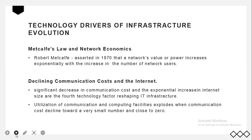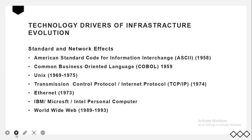The fifth driver is standards and network effects. Without agreements between manufacturers and widespread customer acceptance of technology standards, enterprise infrastructure and internet computing would not be possible. Thanks to technological standards that determine a product's interoperability and a network's capacity to interact, computing is far less expensive than it would otherwise be. These economies of scale are essential to modern infrastructure.